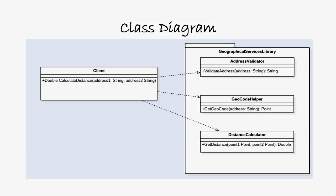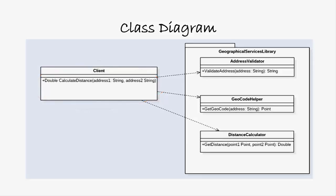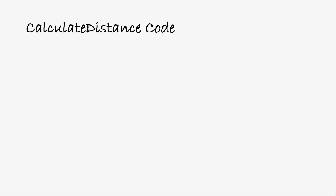The DistanceCalculator calculates the distance between two Point objects and returns the distance as a double data type. On the left hand side we have the client class that has to calculate the distance between two addresses that are both strings. This class interacts with the three classes in the Geographical Services Library to calculate the distance.